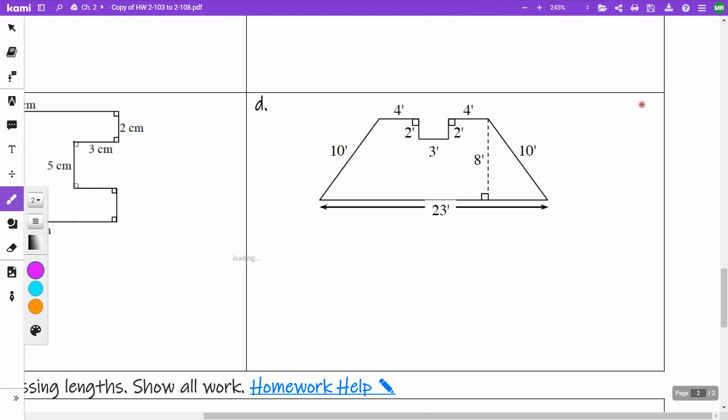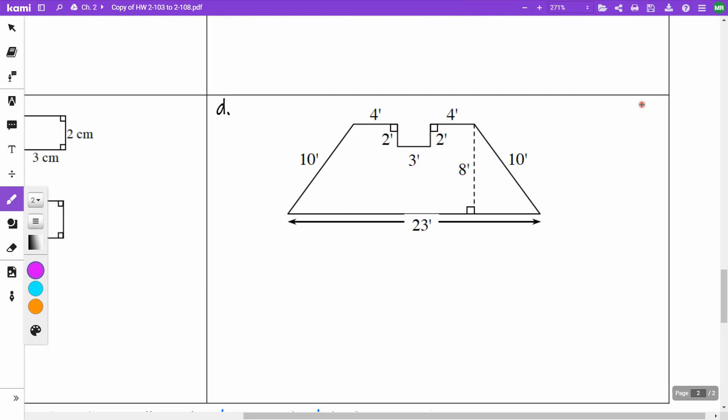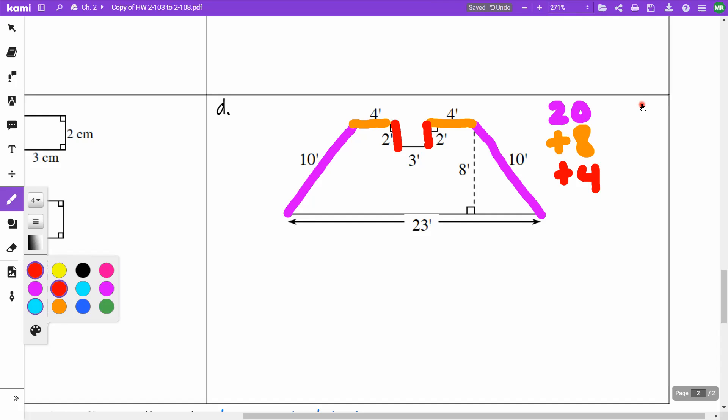On 107d, the perimeter would be us adding up all the way around. So I've got 10, I've got 10, so that's going to be 20. I've got 4 and 4, so I'm going to add another 8. I have 2 and 2, so that's going to be a 4. I have 3 here, so I'm going to have a 3, and then I also have this which is 23. Add all of those up, that will be your perimeter.